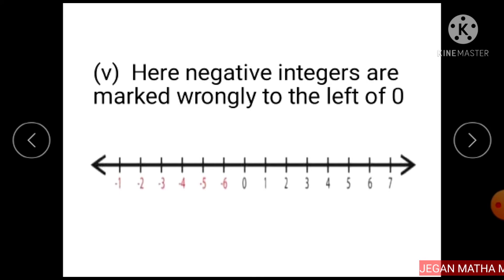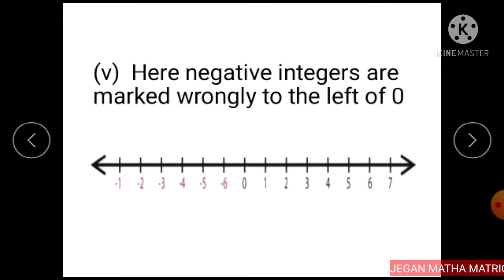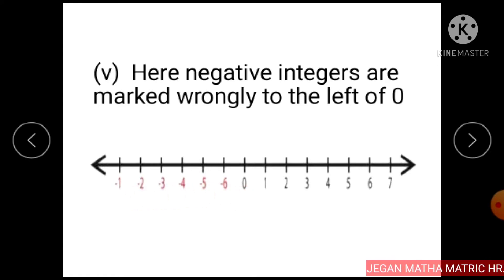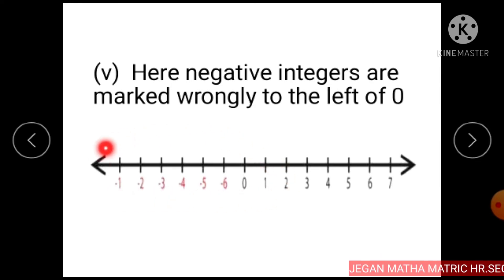Subdivision 5: Here, negative integers are wrongly marked to the left of 0. So this representation is wrong.